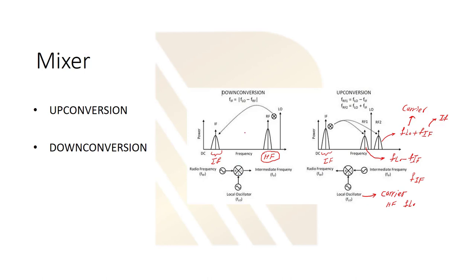Downconversion is done by mixer again. If we have radio frequency and multiply it again by the same local oscillator, we get an intermediate frequency again.